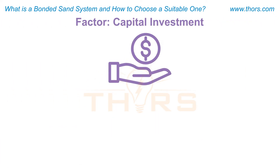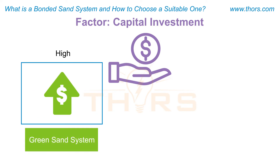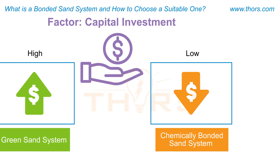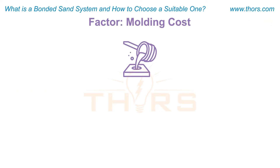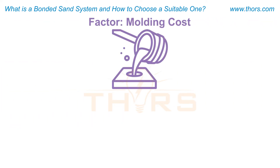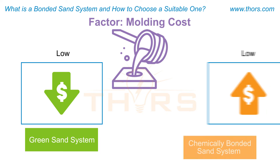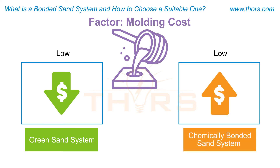The fifth factor is capital investment. The capital investment required to set up a green sand system is high, and low for a chemically bonded sand system. The sixth factor is molding cost. The cost of mold production is low for a green sand system and high for a chemically bonded sand system.